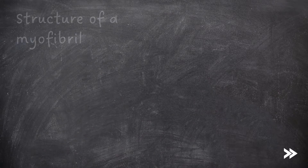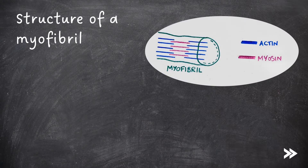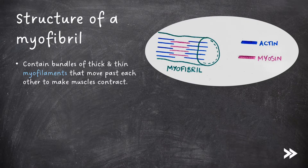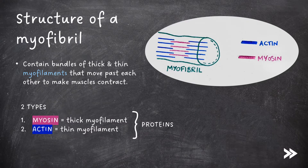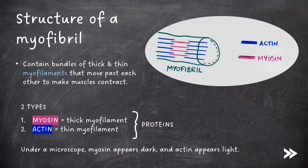So let's zoom into the structure of a myofibril. Myofibrils contain bundles of thick and thin myofilaments that move past each other to make muscles contract. There are two types of myofilaments: myosin and actin, both of which are proteins. Myosin is a thick myofilament and actin is a thin myofilament. Under a microscope, myosin appears darker and actin appears lighter.